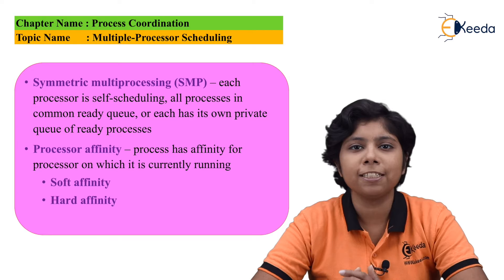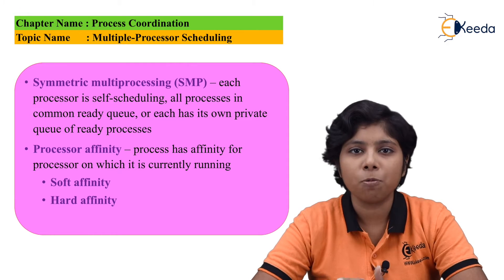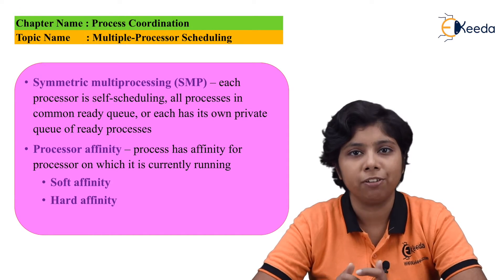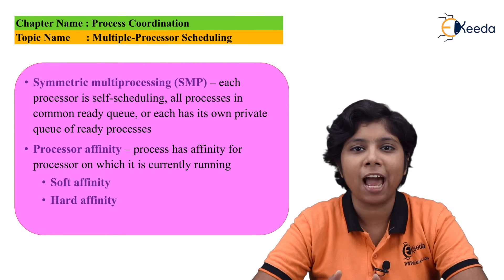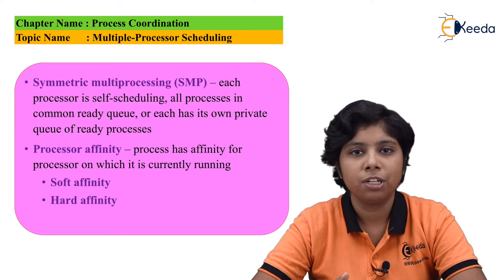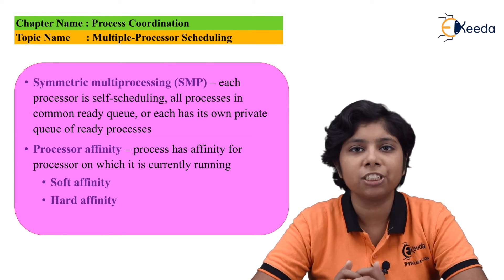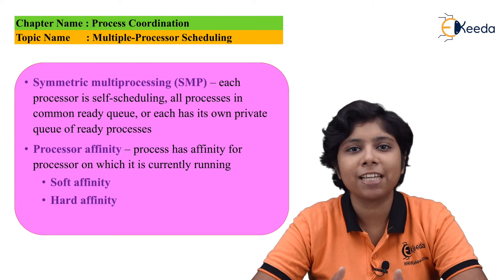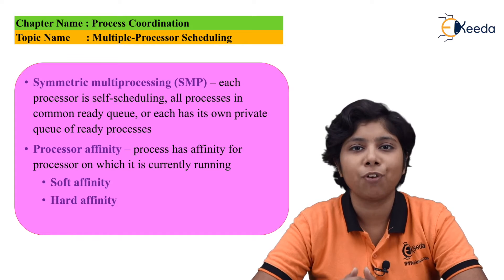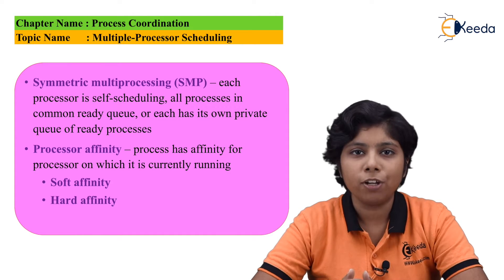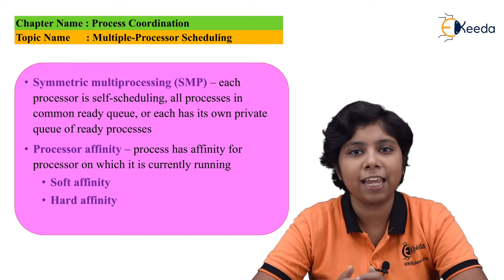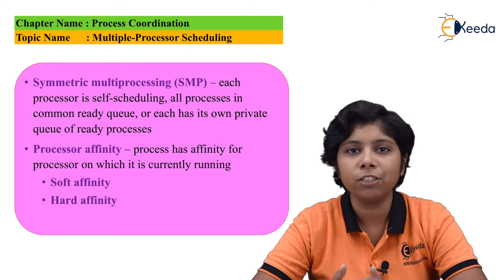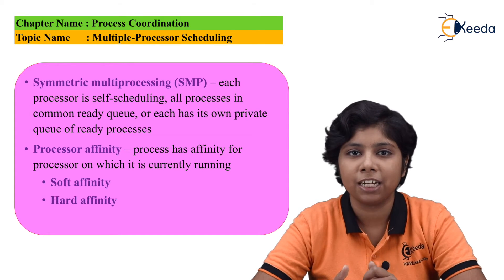Another approach is symmetric multiprocessing. In this type, all processors are self-scheduling and they can have a common ready queue or each processor can have their own private ready queue. While proceeding with scheduling, the scheduler for each processor must examine the ready queue and then select a process from it. If two or more processes are sharing the same data structure and try to access that data, then the scheduler must be programmed very carefully.